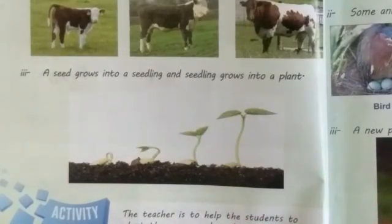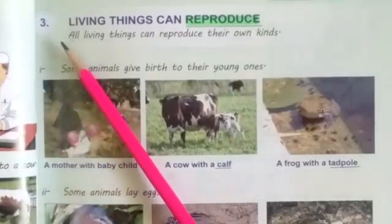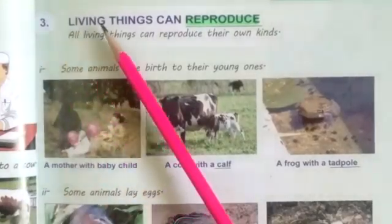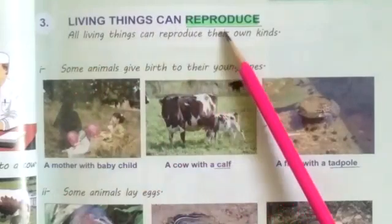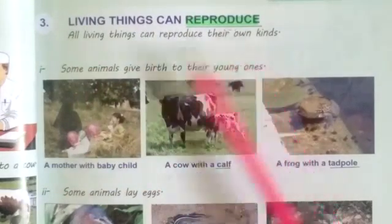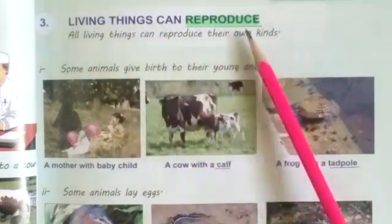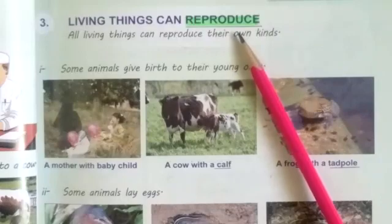Plants also have growth. The third characteristic is: living things can reproduce. Living things reproduce भी कर सकते हैं.